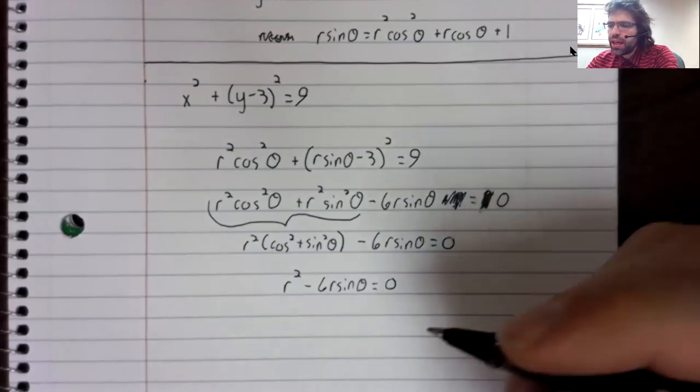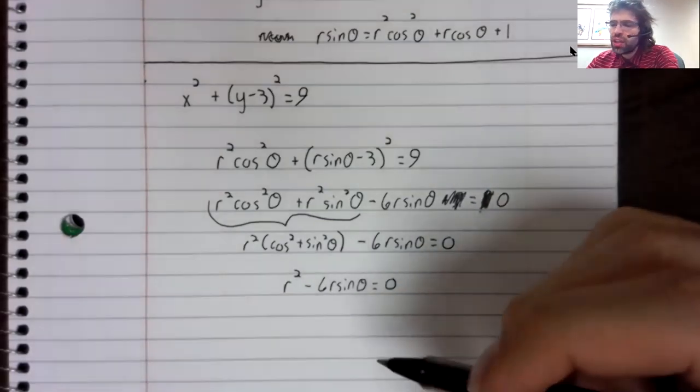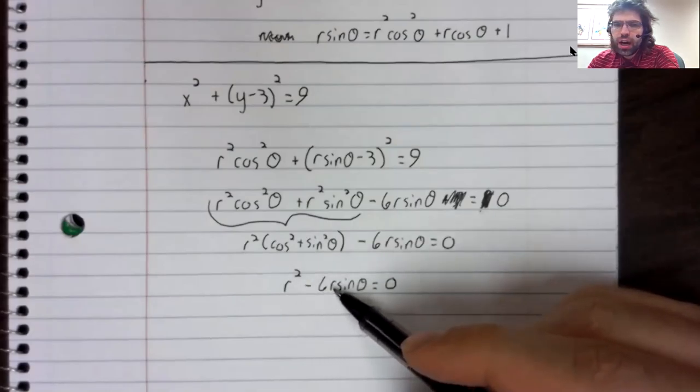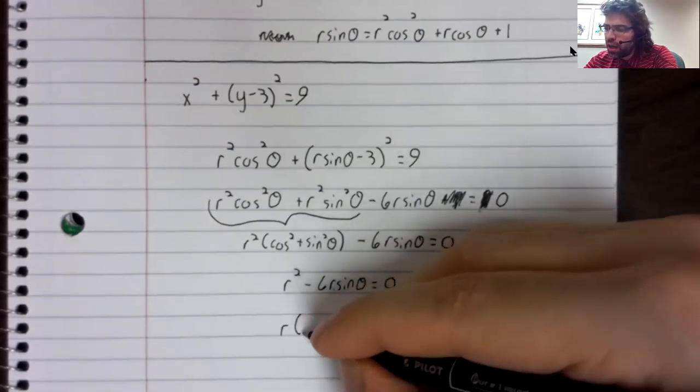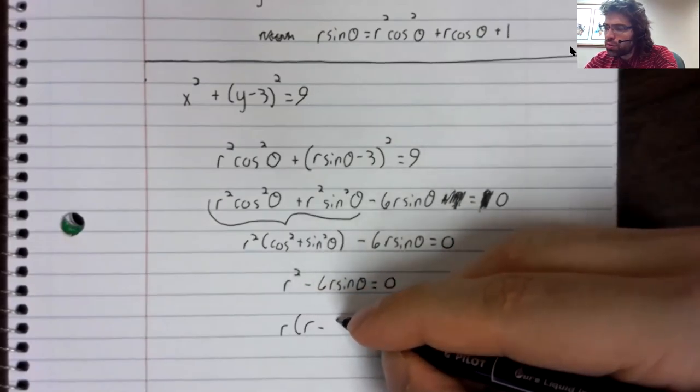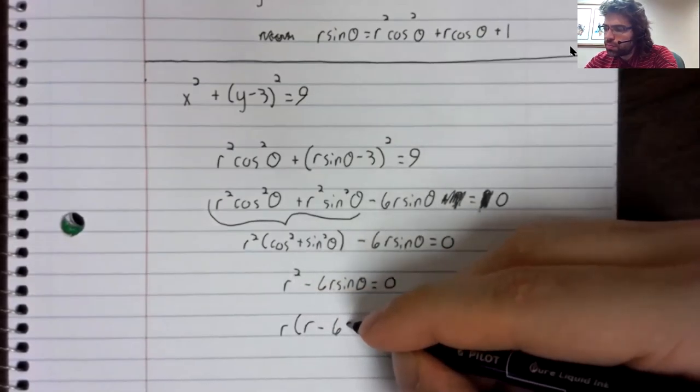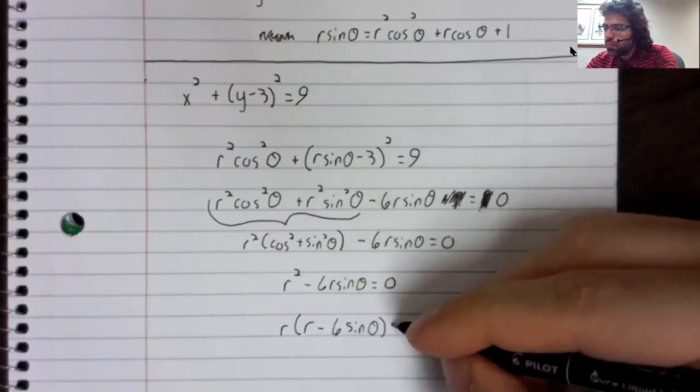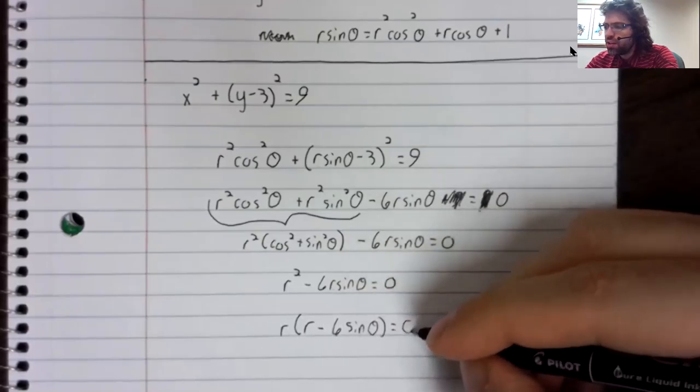We can do better still. We've got an r squared and an r. If we pull an r out. We get to this.